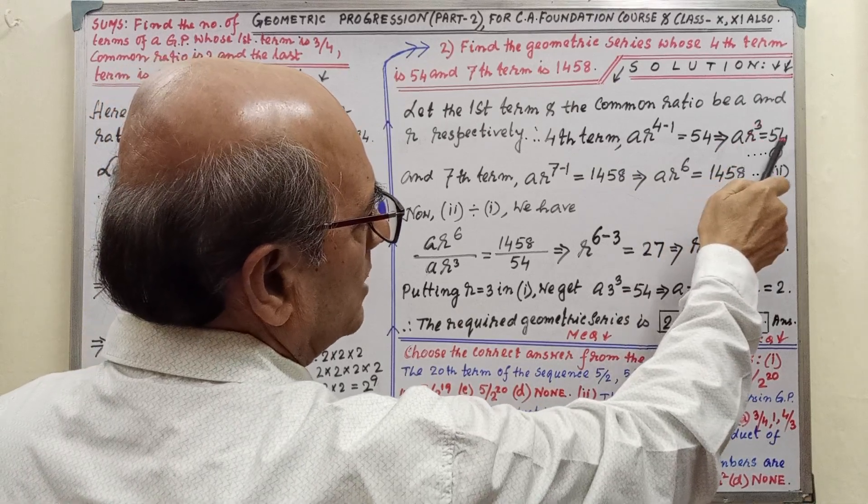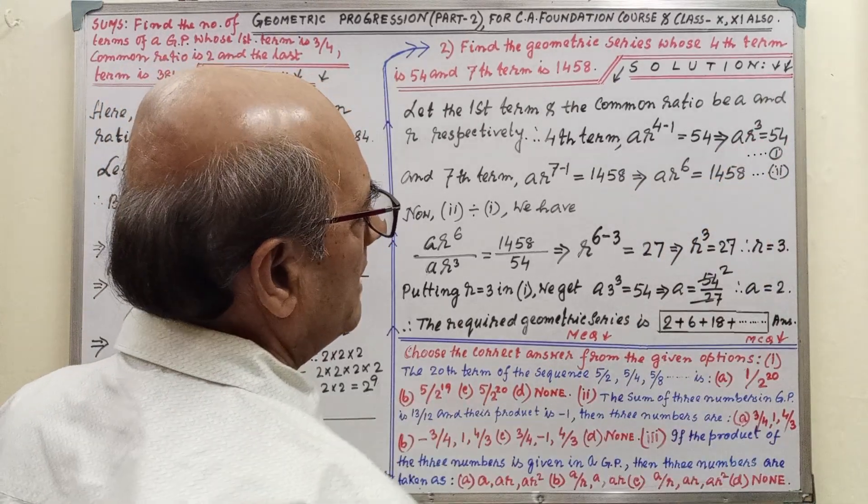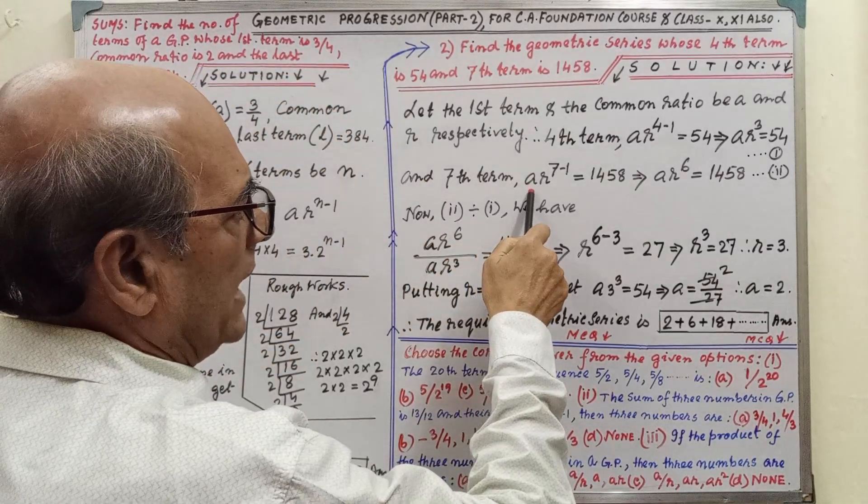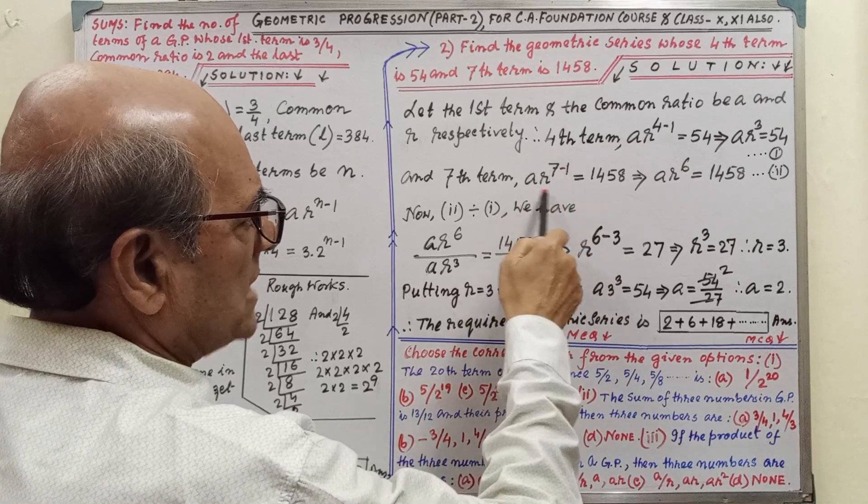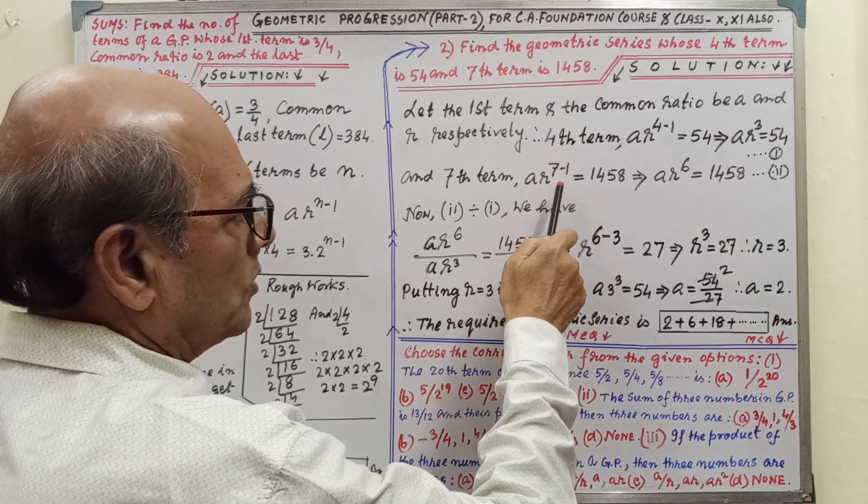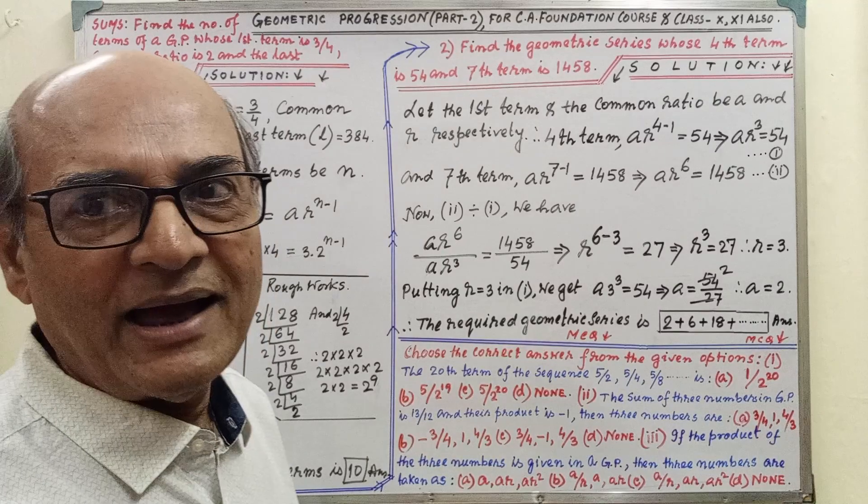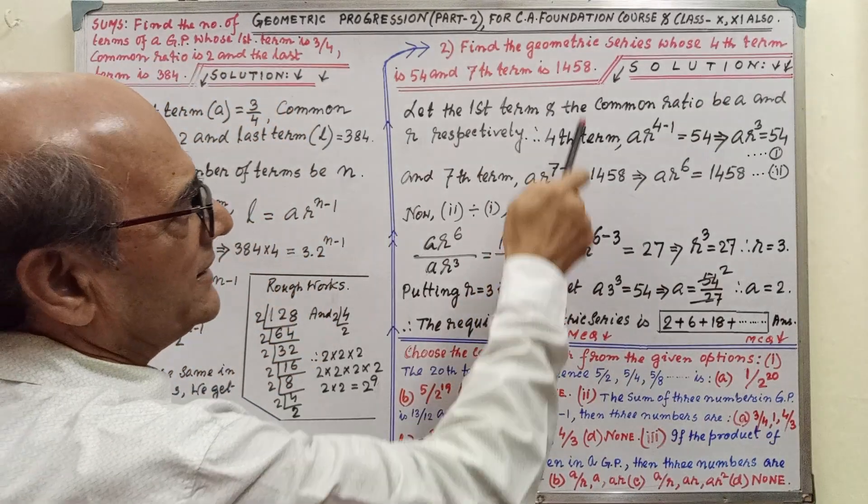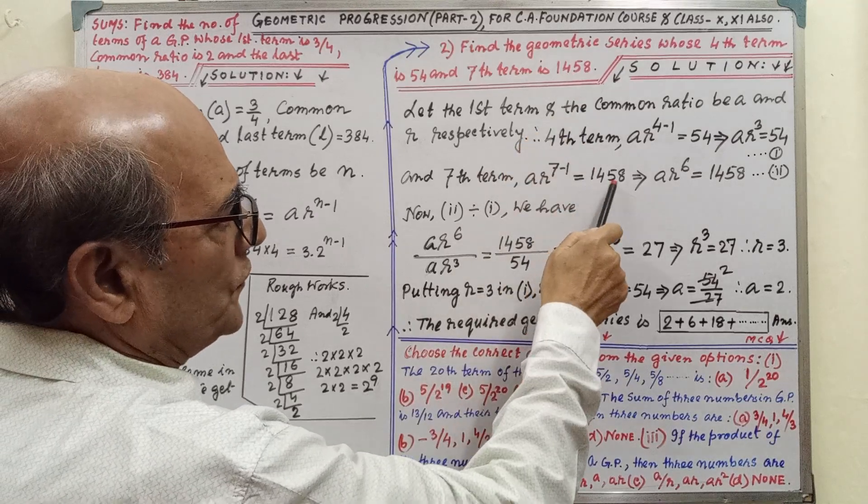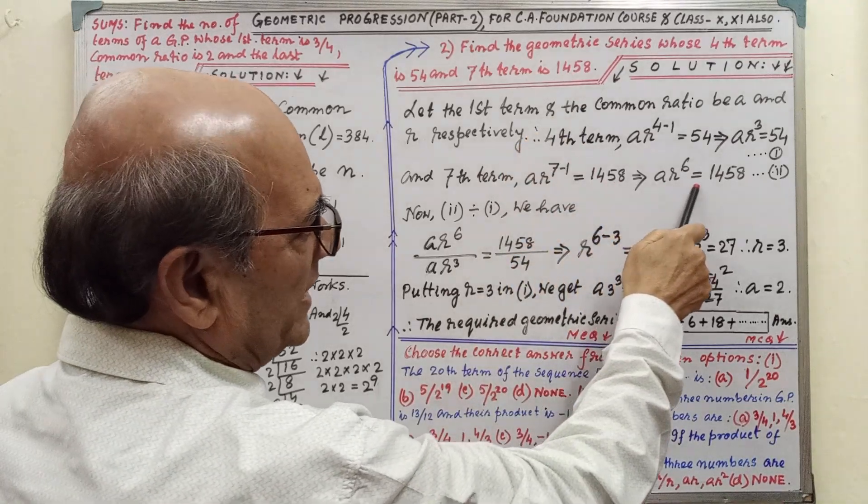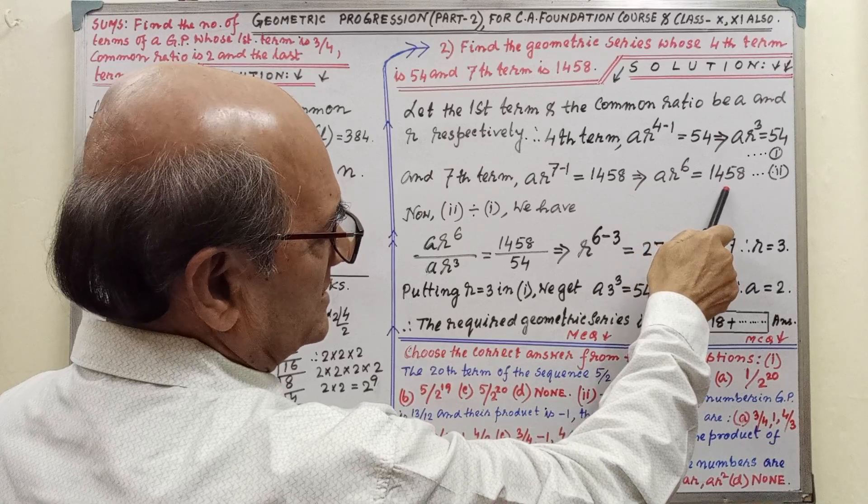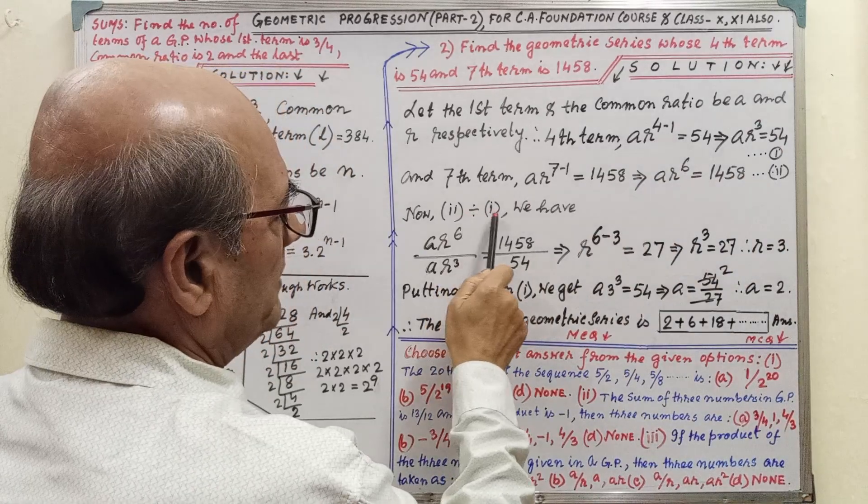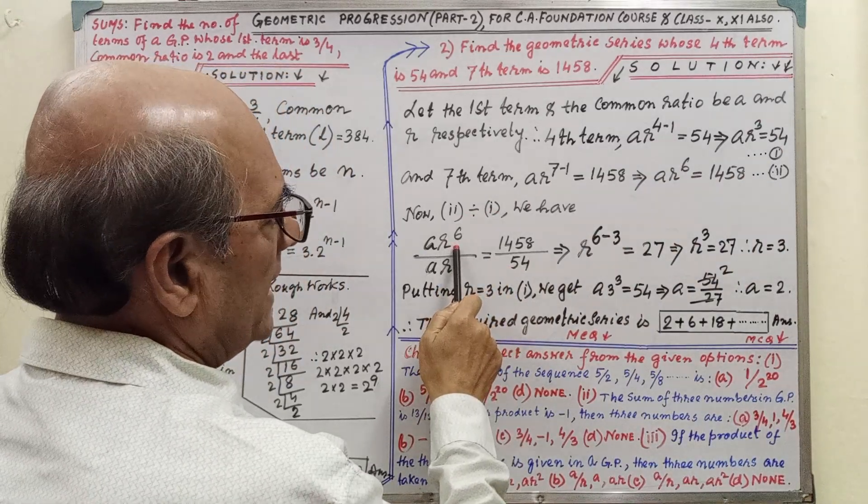And the seventh term, that is A·R^(7-1). This is coming from formula what you have learned at part 1 video on geometric progression. Here it is given 1458. After writing and simplifying we are getting A·R^6 = 1458. This is denoting by 2. Now 2 divided by 1: A·R^6 divided by A·R^3 = 1458/54.